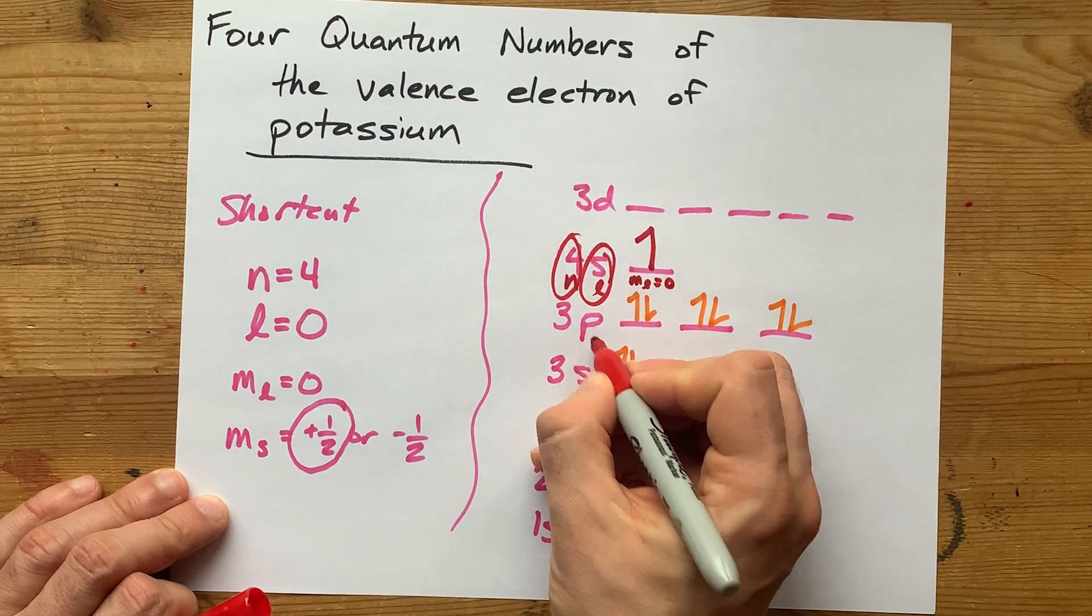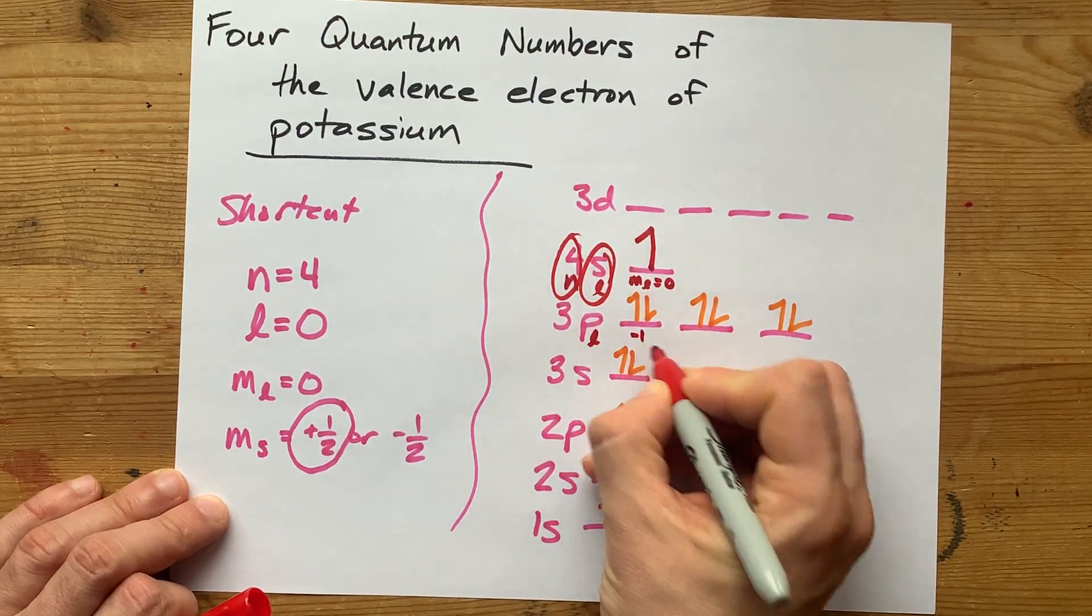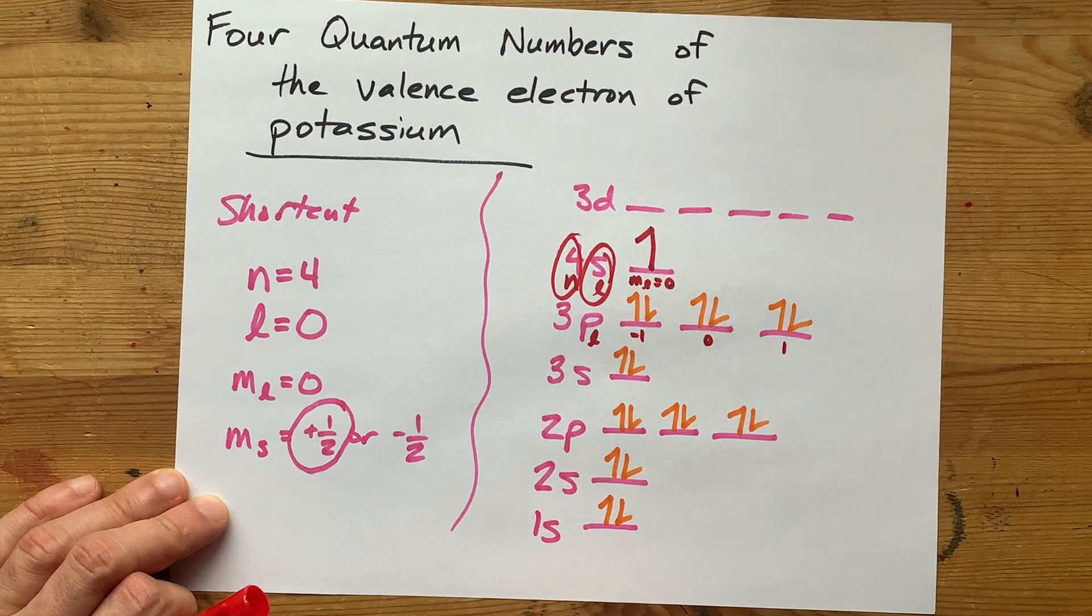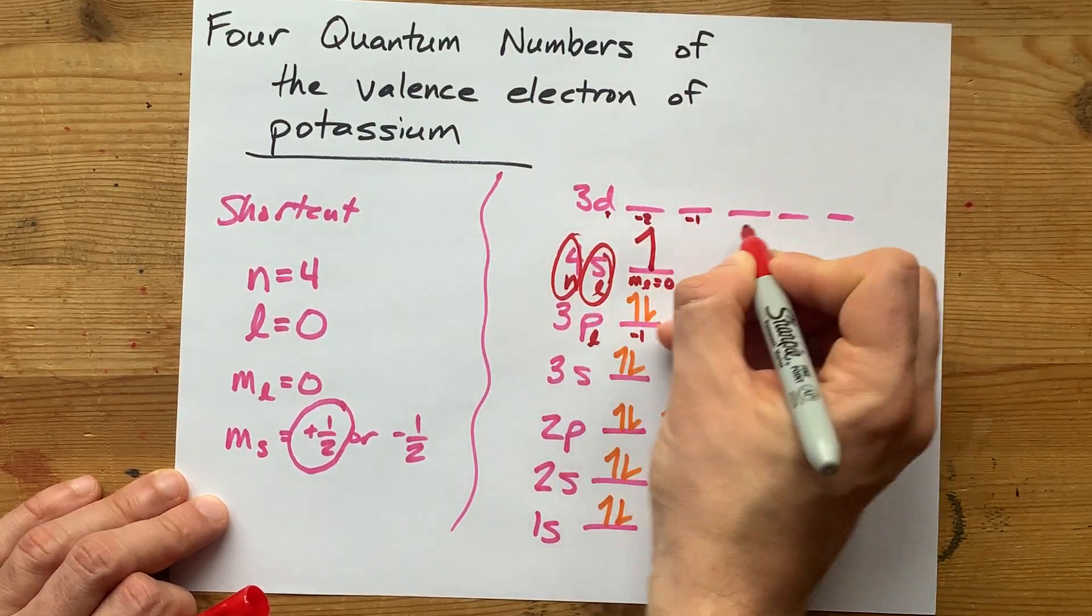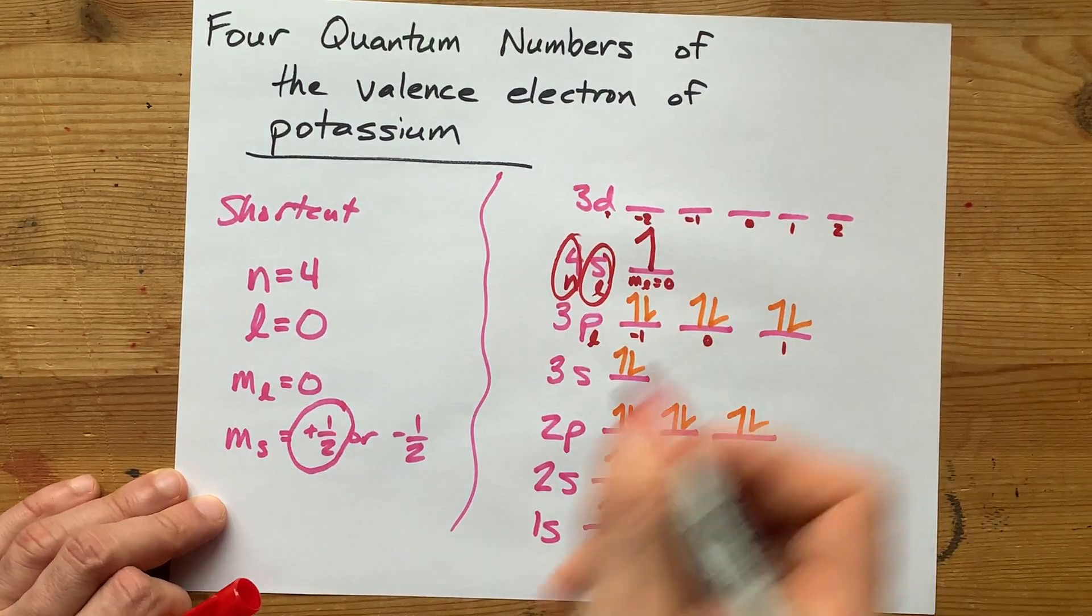But for P, where L equals 1, this could be negative 1, 0, or 1. For D, where L is 2, you have negative 2, negative 1, 0, 1, and 2 in that order.